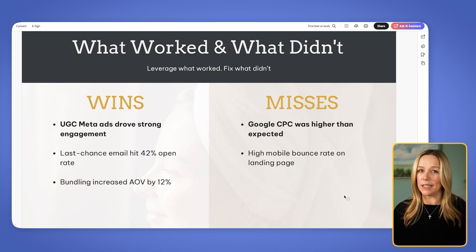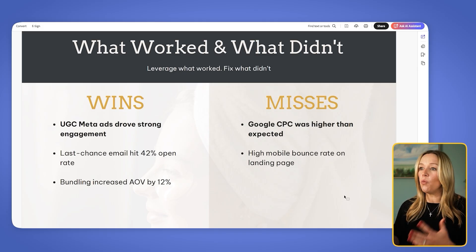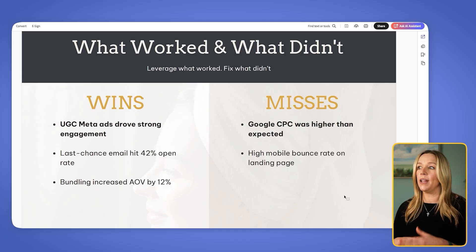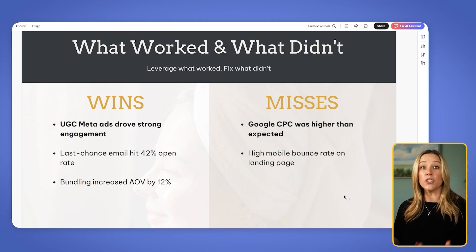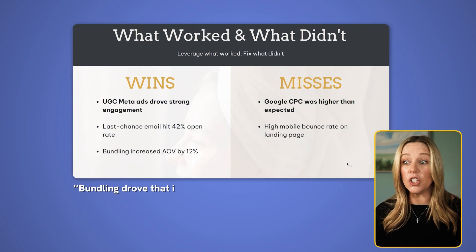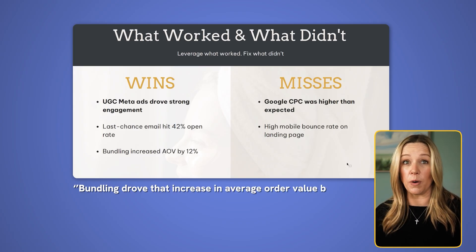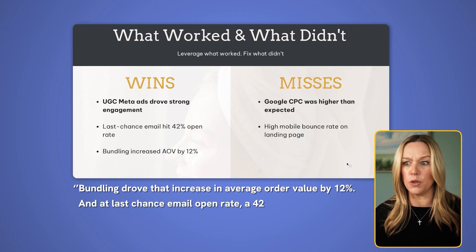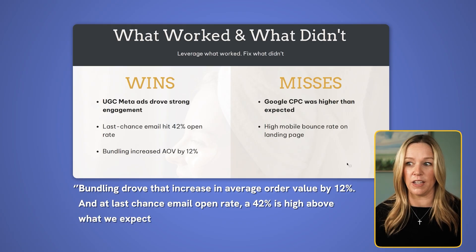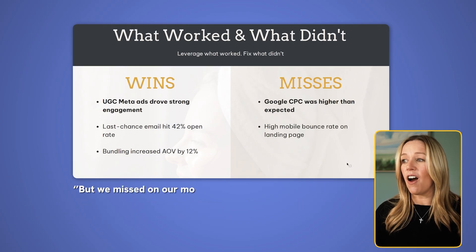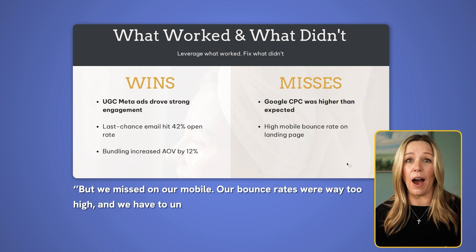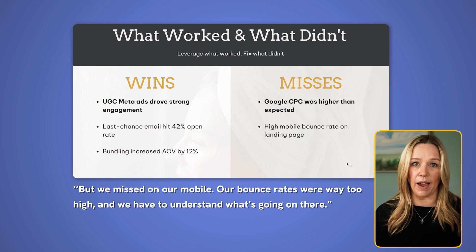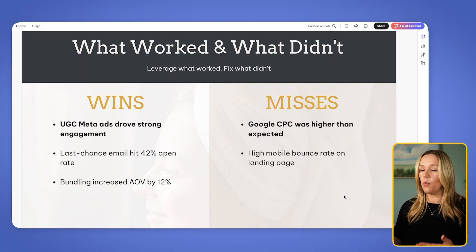Next, we have our simple bullet point slide. But this is the turning point of the deck because we want everyone to understand that we're not just sharing our wins, but we're also evaluating the entire process honestly. This helps to establish trust. So we'll start with the win side: bundling drove a 12% increase in average order value, and a last-chance email open rate of 42% is well above what we expect and absolutely wild. But we missed on our mobile — our bounce rates were way too high and we have to understand what's going on there. We don't want to skim over these things because we want to establish our credibility and our honesty.